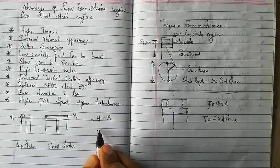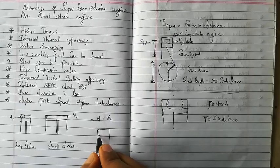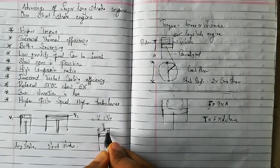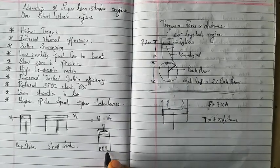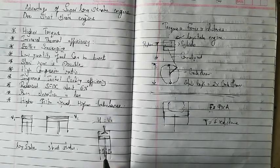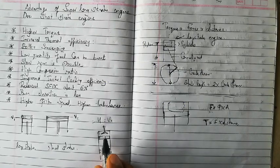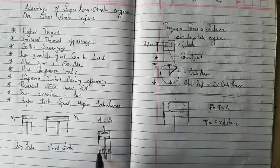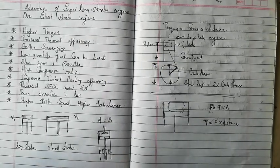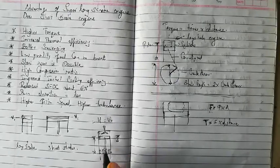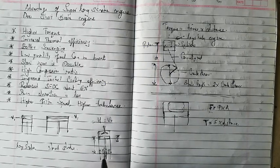The third advantage is better scavenging, especially for uniflow scavenging. In uniflow scavenging, we have the piston, an exhaust valve at the top, and scavenge ports at the bottom. When scavenging happens, the piston is down and fresh air enters through the scavenge ports into the cylinder. In a long stroke engine, the distance between TDC and BDC is much greater than in a short stroke engine.